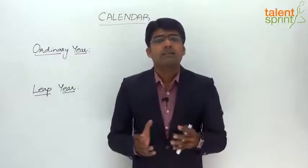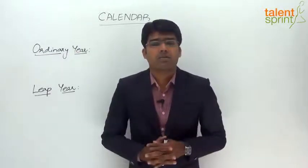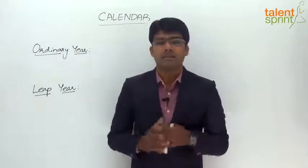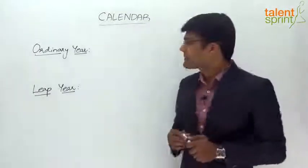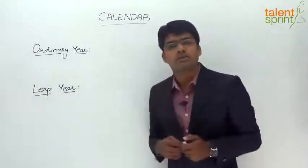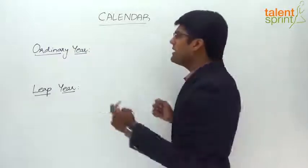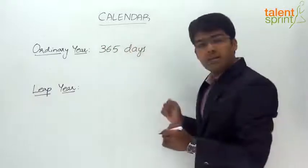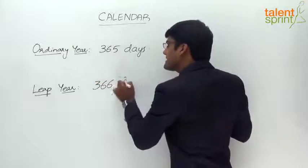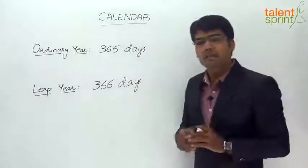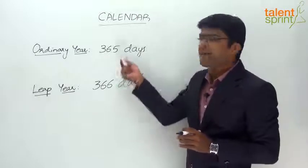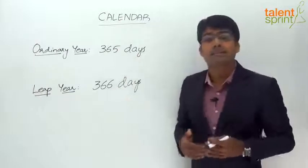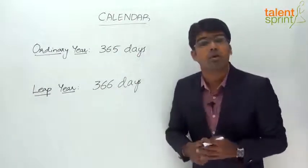In this session, whenever we use the word calendar, we refer to the Gregorian calendar, which is internationally the most widely used civil calendar. Moving on, a year is classified into two types: an ordinary year and a leap year. An ordinary year has 365 days, whereas a leap year has 366 days. So a leap year has one more day than an ordinary year.